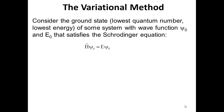Let's start off thinking about the Schrodinger equation from a slightly different point of view. If we consider the ground state of some system — ground state means the lowest quantum number allowed, so for a particle in a box that's n=1, for a harmonic oscillator that's v=0 — this corresponds to the lowest energy state for the system, with a wave function psi_zero associated with it, and an energy that satisfies the Schrodinger equation: H psi_zero = E psi_zero.